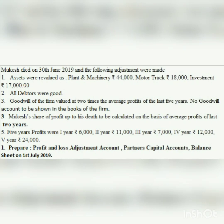Third adjustment: goodwill of the firm valued at 2 times the average profit of last five years. We need to value the goodwill - find the average profit of last 5 years and multiply by 2. Since it says no goodwill account to be shown in the books of the firm, we write it off. So the entry is: raise goodwill, then write it off - similar to the retirement chapter.